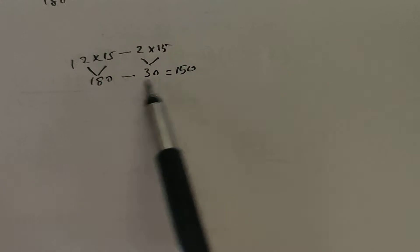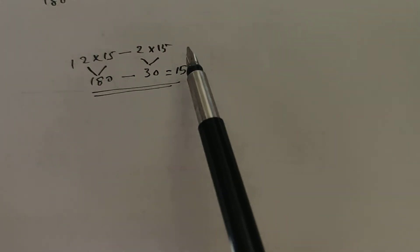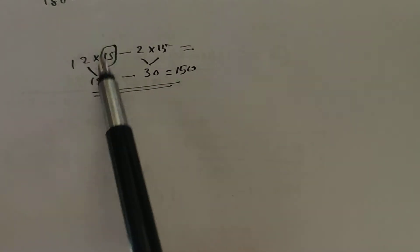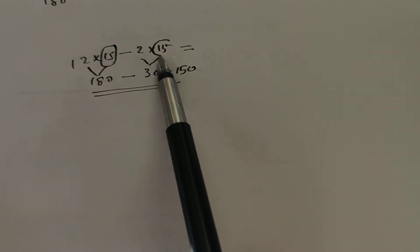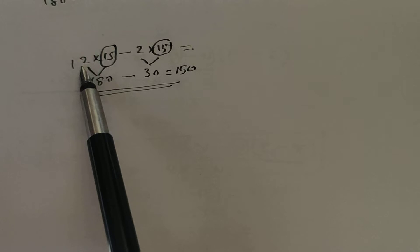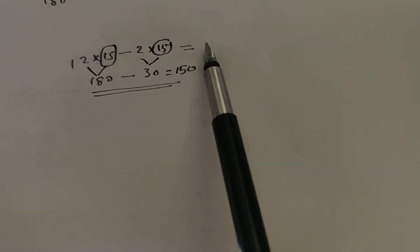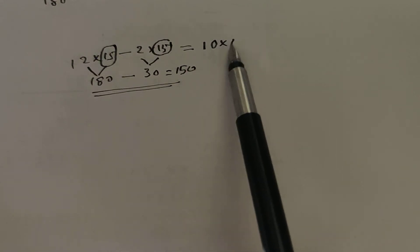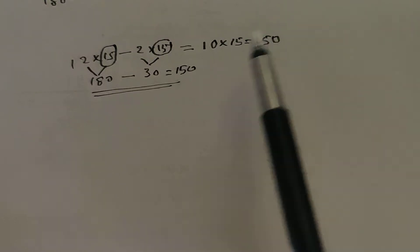But this calculation is difficult and we have discussed an earlier easy method for this. We have 12 fifteens there, and we want to subtract 2 fifteens. Out of 12 fifteens, 2 fifteens are going. Therefore, how many 15s are there? There are only 10 fifteens. 10 into 15 is equal to 150. That is the calculation.